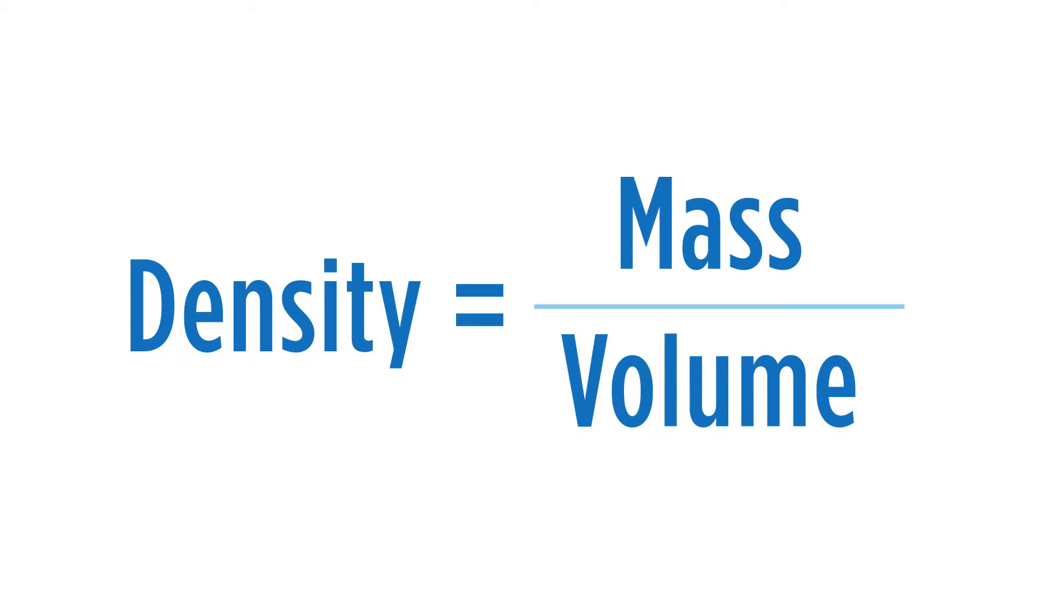If we think about density, density is mass over volume. In this case, we have 37.0 grams and the volume is 0.00508 liters. But looking at the chart, we know that we're going to be looking for an answer that is using grams per milliliter. Therefore, we're going to have to convert liters into milliliters.